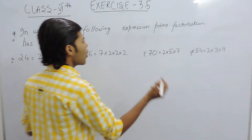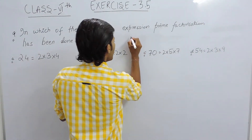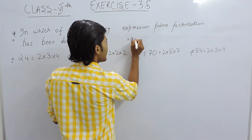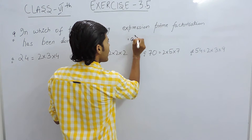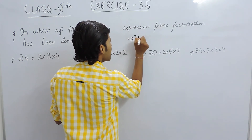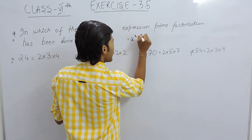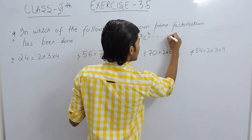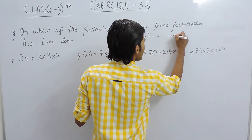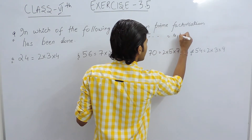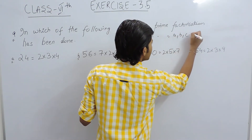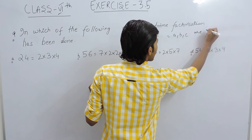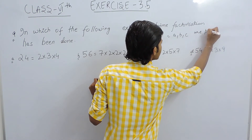As I already told you, in prime factorization we write it like a to the power x, b to the power y, c to the power z, and so on, where a, b, and c are prime factors.